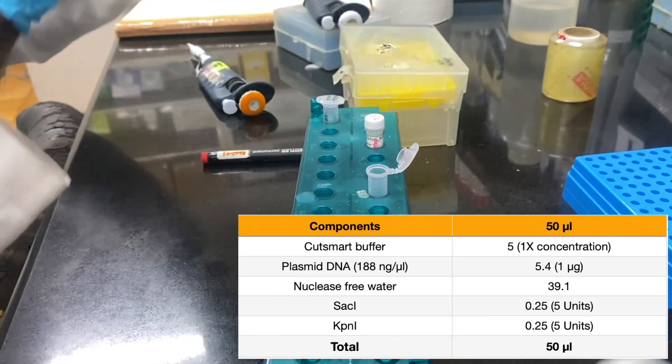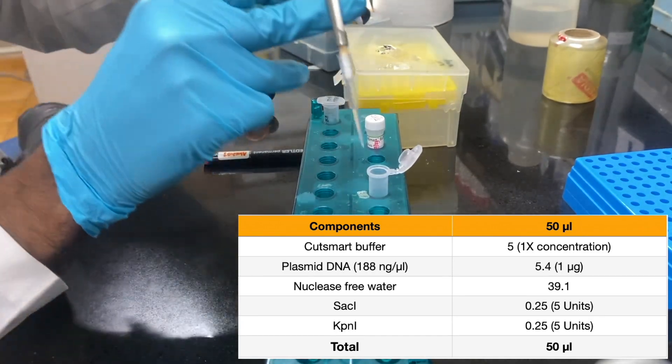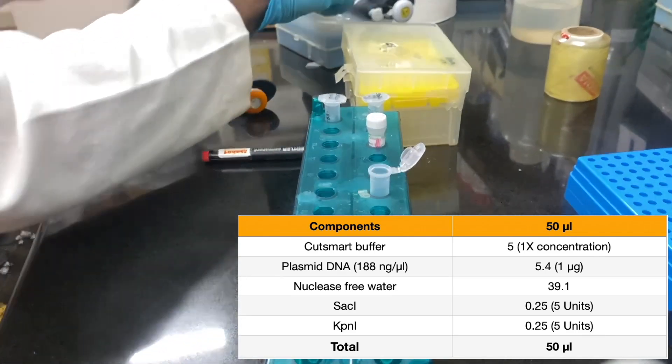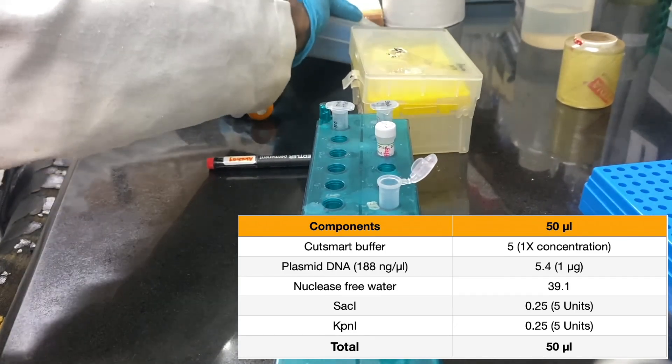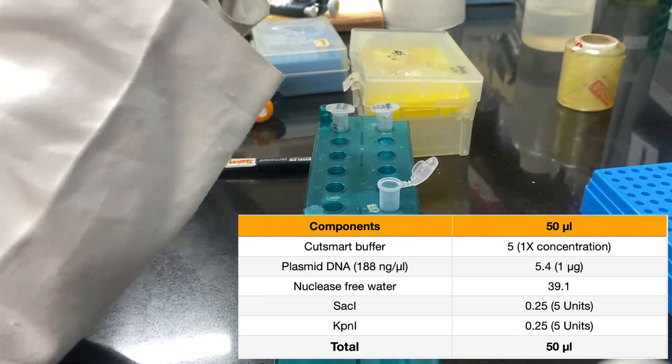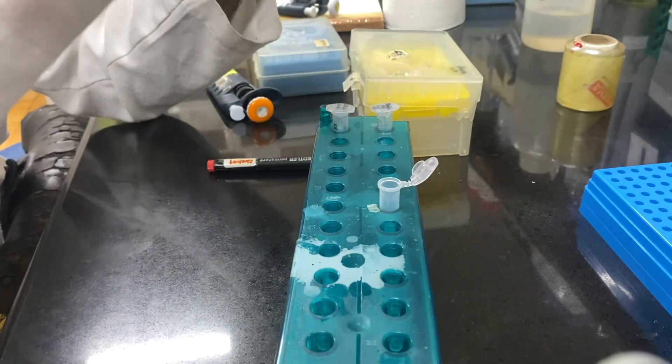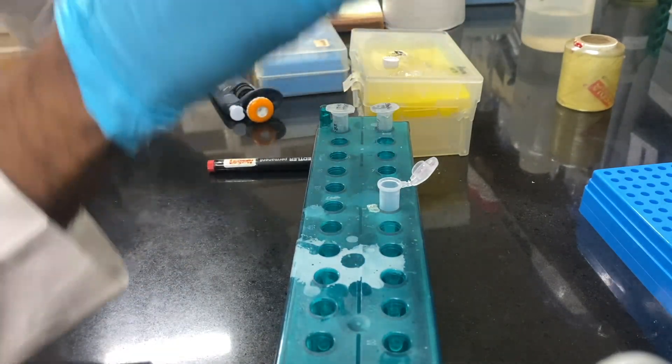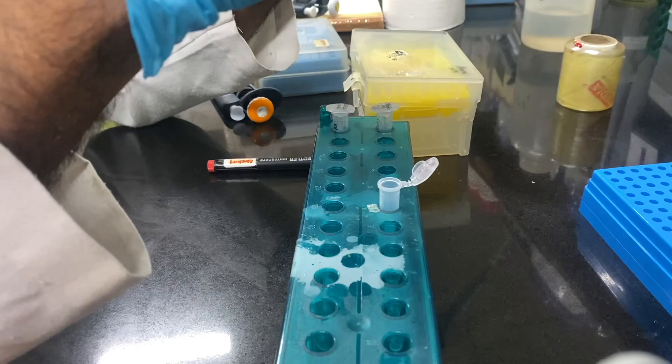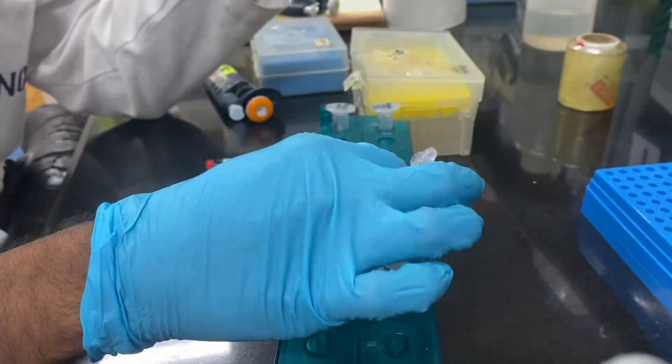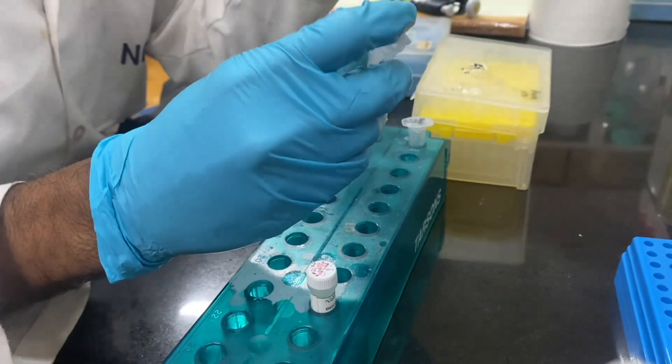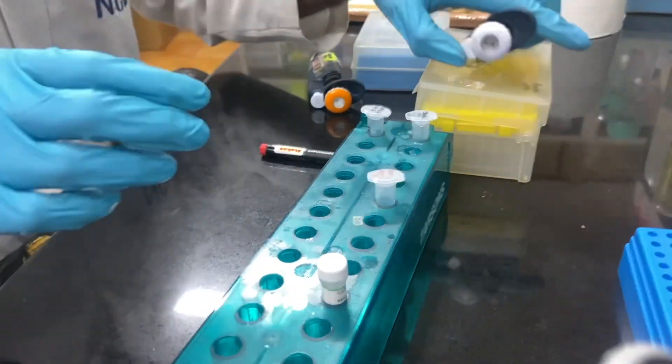First we will add the nuclease-free water or sterile milli-Q water. Then we will add the restriction endonuclease buffer which has a concentration of 10x. Make sure that you have thawed this restriction endonuclease buffer at room temperature and you have vortexed it so there is no precipitation. The buffer has been added.